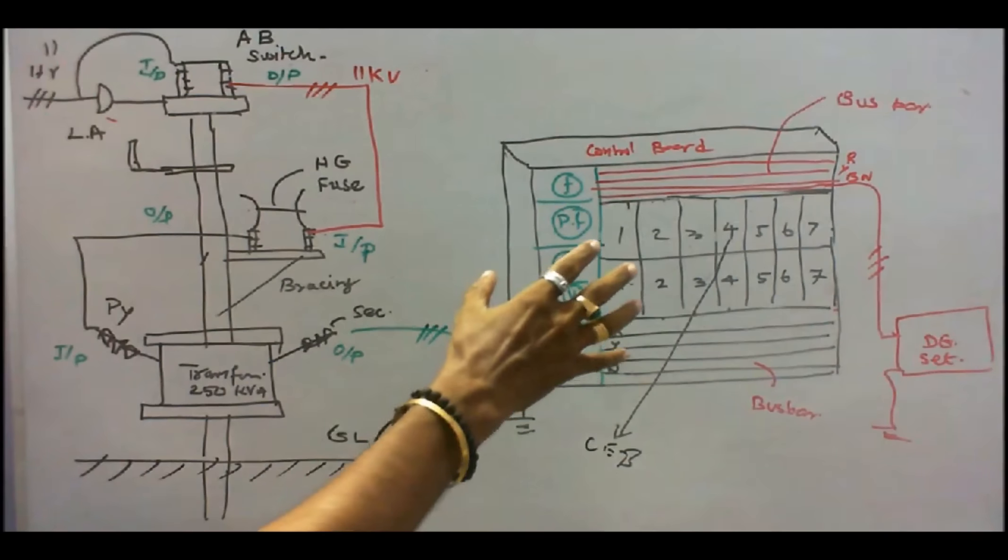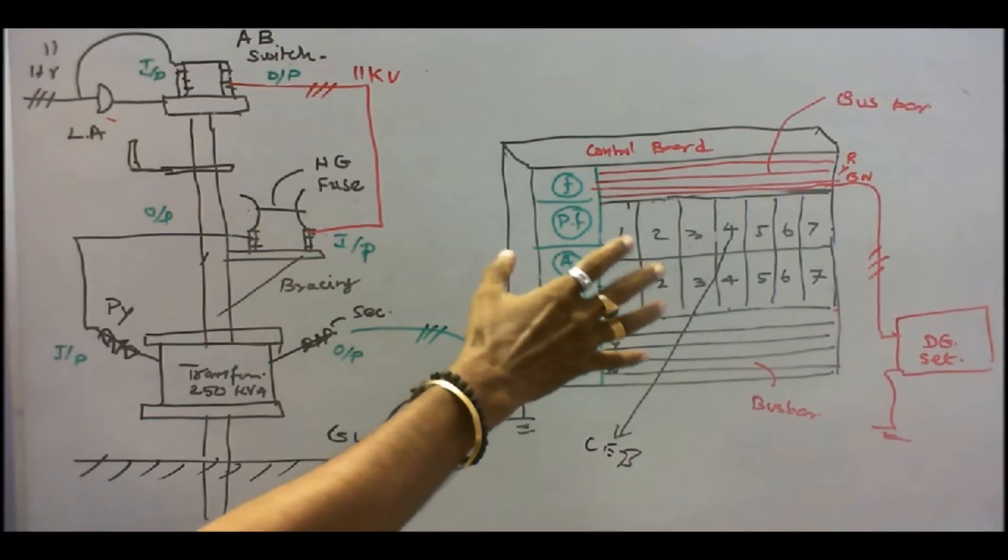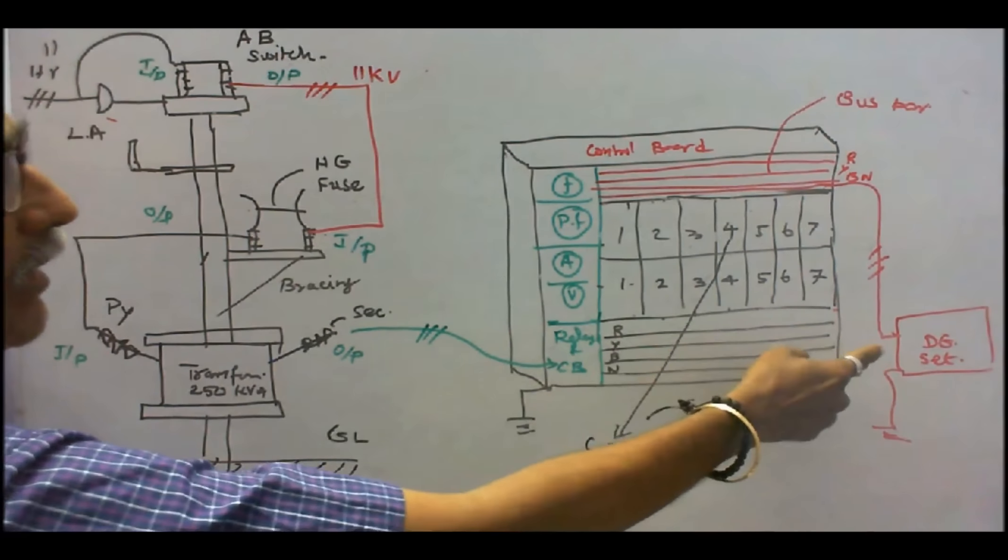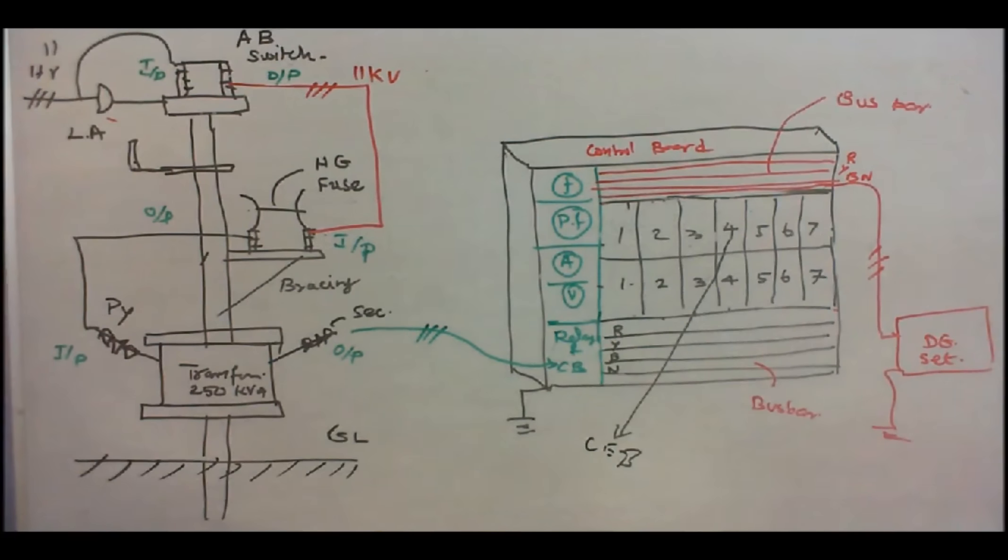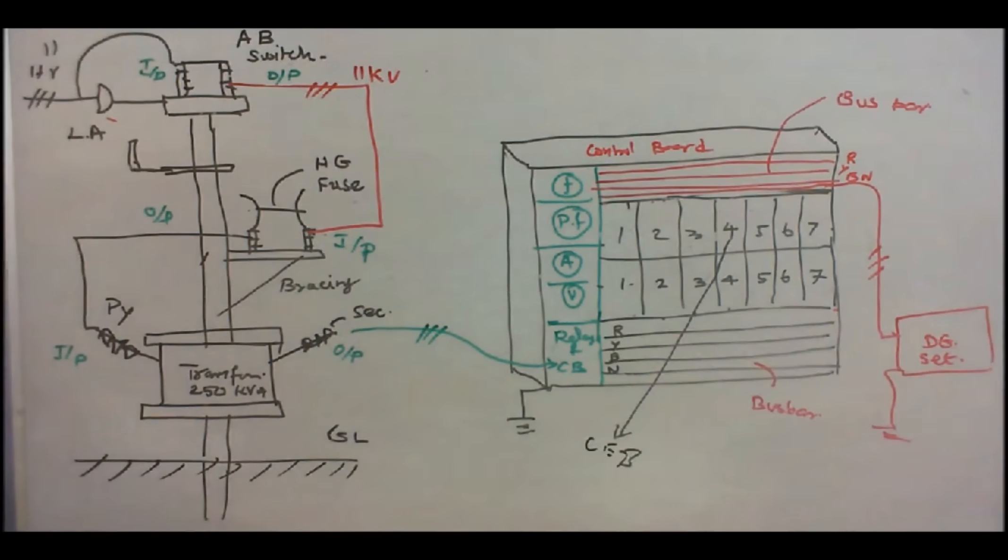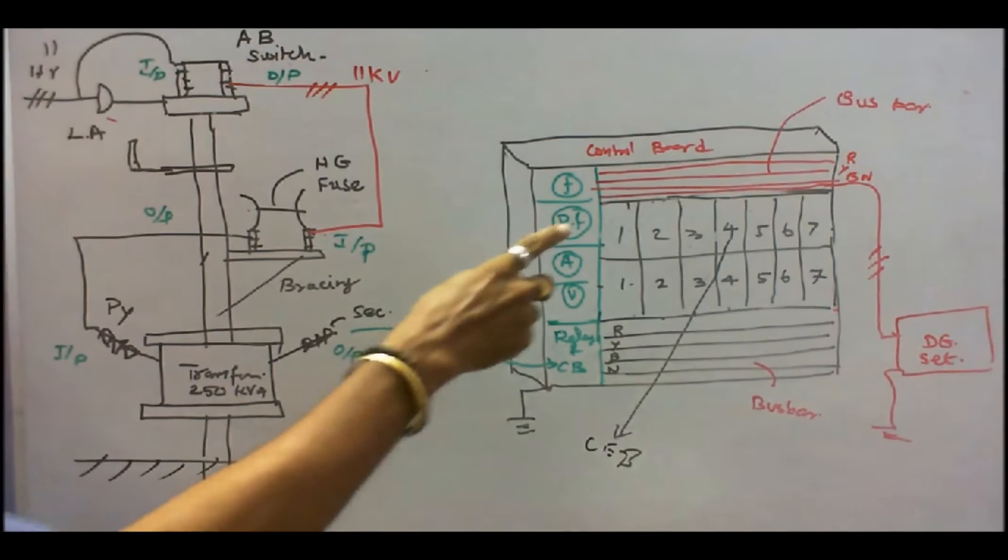This is a view of the main distribution control board. Here this is a TNEB unit supply. This is a diesel generator set supply. In event of power failure or maintenance, we have to operate the DG set. We have 7 feeders. Naturally we need 7 switches. Therefore totally we need 14 switches.